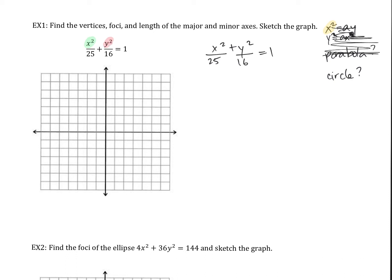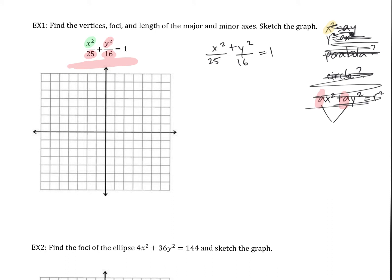Next, is it a circle? The generic equation for a circle is ax² + ay² = r², where the coefficients are the same number. Here, x² and y² have 25 and 16 underneath them — those are not the same number. So this is not a circle. Therefore, it must be an ellipse.